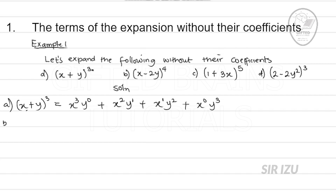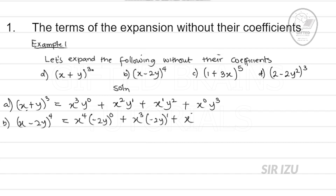For question (b): x minus 2y all raised to power 4. Here n is 4, so start with x to power 4 and minus 2y to power 0. Next: x to power 3 and minus 2y to power 1. Then x to power 2 and minus 2y to power 2. Then x to power 1 and minus 2y to power 3. Finally, x to power 0 and minus 2y to power 4.